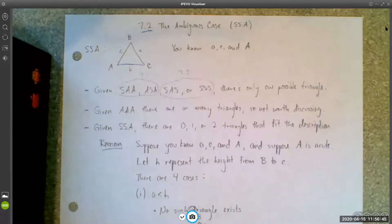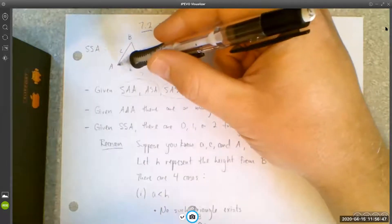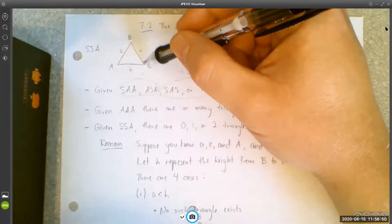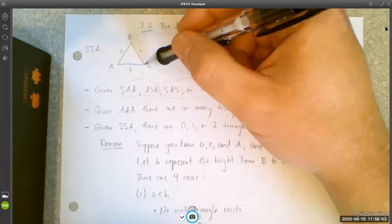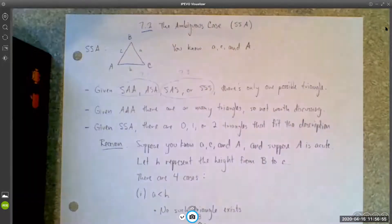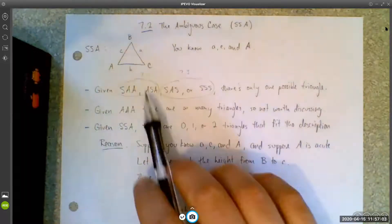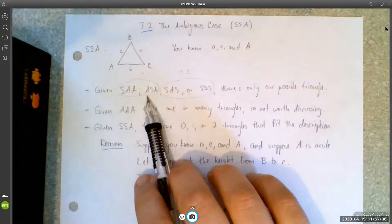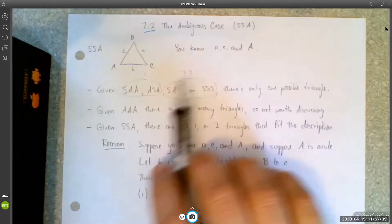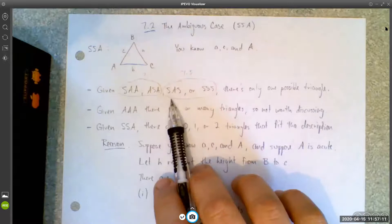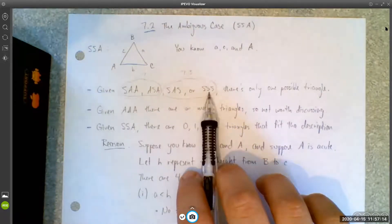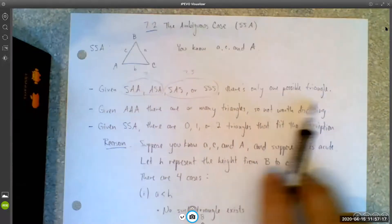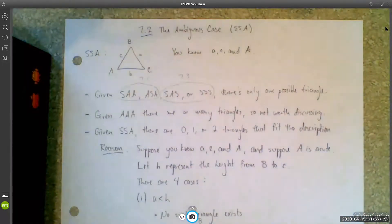Something that would not be side-side-angle would be if you knew B, angle C, and then side A. That's not side-side-angle — that's side-angle-side, which is not an ambiguous case at all. So the ambiguous case is the side-side-angle case. We talked in 7.1 about the side-side-angle and the angle-side-angle case. In 7.3, we'll talk about side-angle-side and side-side-side. With those four cases, there's only one possible triangle that can result from the information given, so they're not ambiguous.